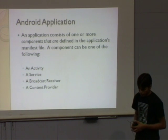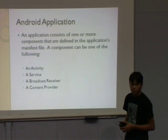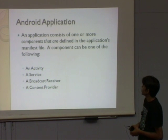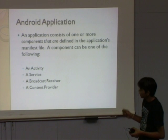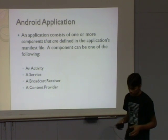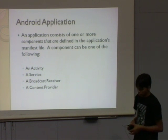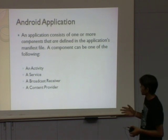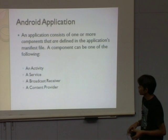What is an Android application? An Android application consists of one or more components that are defined in the application manifest file. When you create an Android project, there is a file AndroidManifest.xml where you define each activity, service, content provider, and task that you have implemented in your project.